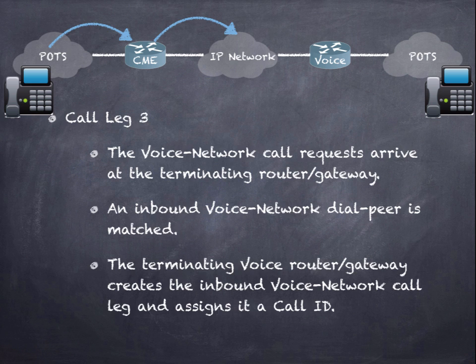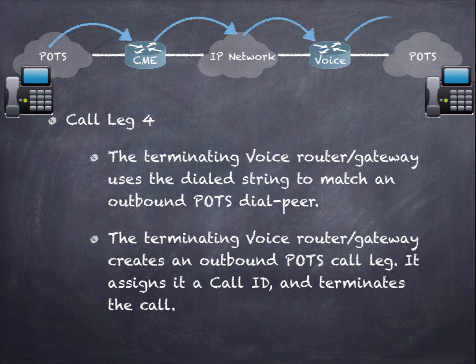Call leg three: the voice network call request arrives at the terminating router gateway, an inbound voice network dial peer is matched, and the terminating router creates the inbound voice network call leg with a call ID. Call leg four: the terminating voice router uses the dialed string to match an outbound POTS dial peer, creates an outbound POTS call leg, assigns it a call ID, and terminates the call. So four call legs are created, each with a call ID.